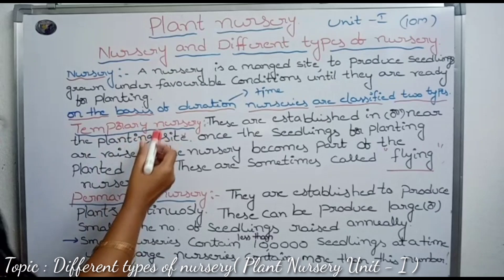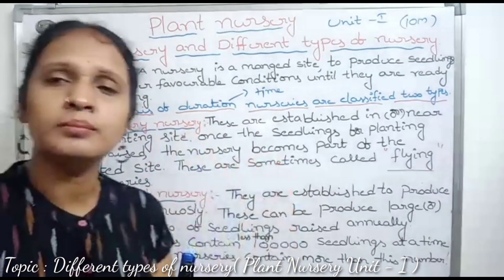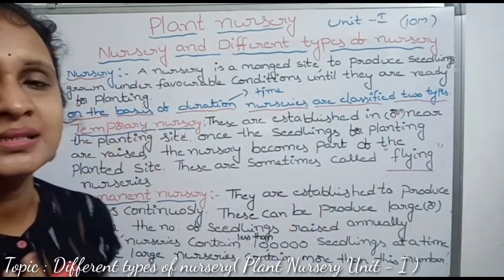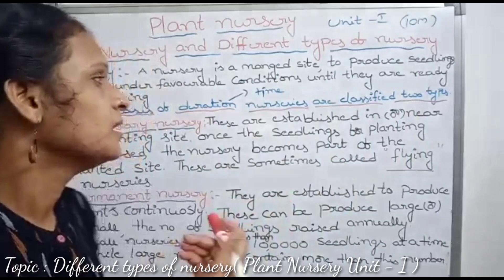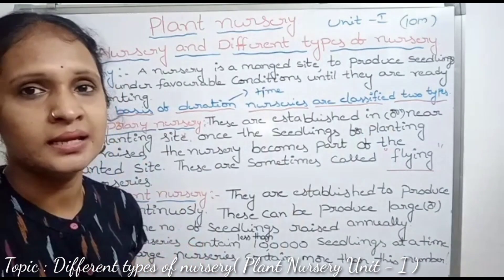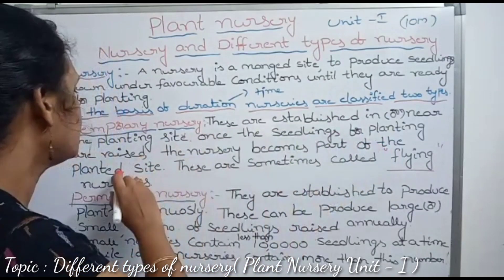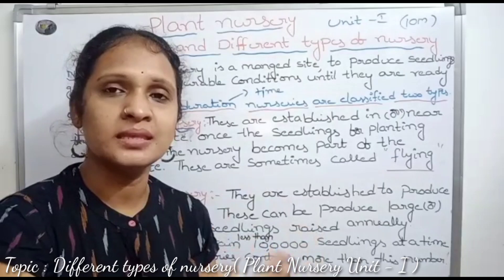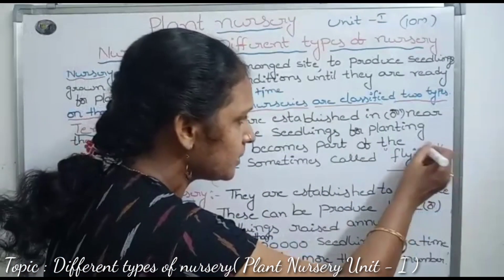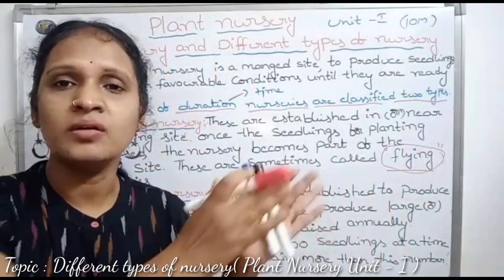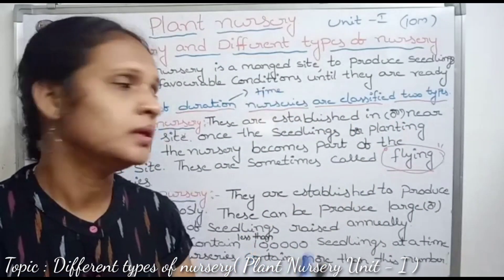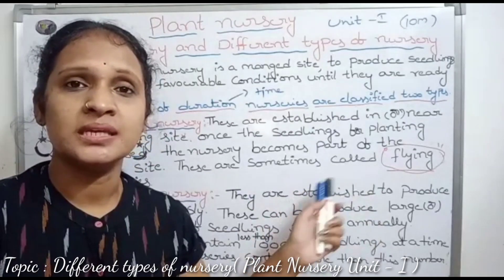These nurseries are established in or near the planting site. Once the seedlings for planting are raised, the nursery becomes part of the planted site. Another name for this temporary nursery is flying nursery.